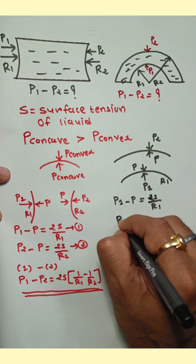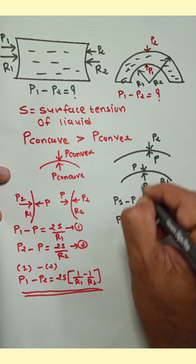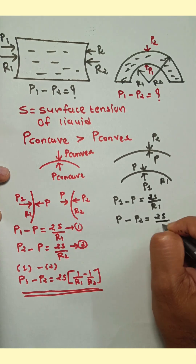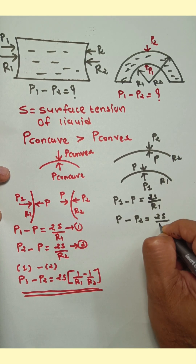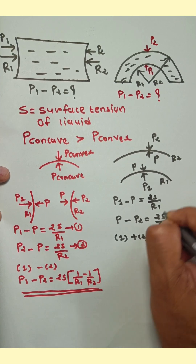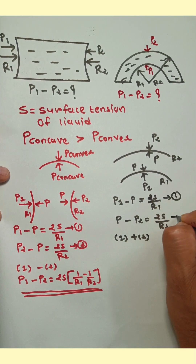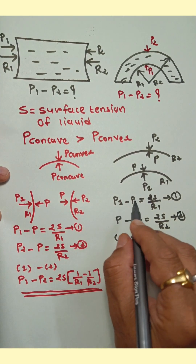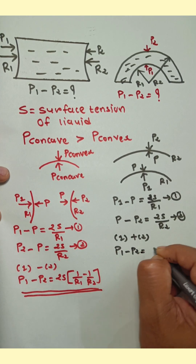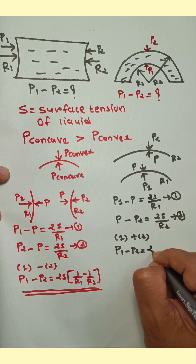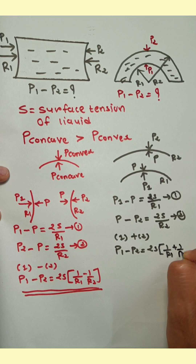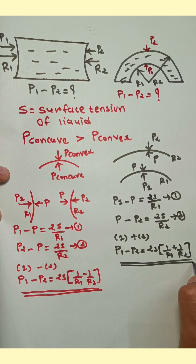For the second surface, pressure on the concave side minus pressure on the convex side gives P minus P2 equals 2S upon R2. Now adding Equation 1 and Equation 2: P1 minus P plus P minus P2, where P cancels, giving P1 minus P2 equals 2S upon R1 plus 2S upon R2, which simplifies to 2S times the quantity 1 upon R1 plus 1 upon R2. That is the equation for the pressure difference.